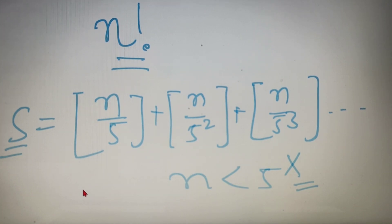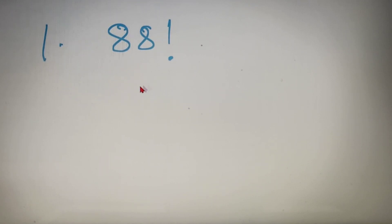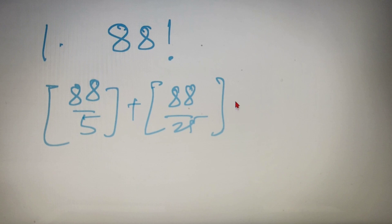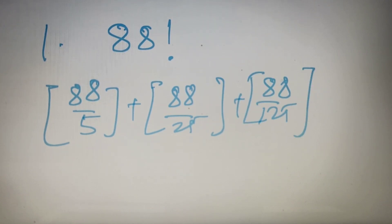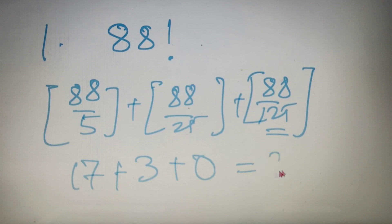If you have trouble understanding this formula, let us solve some examples to make the concept clear. For our first example, we have to find out the number of zeros at the end of 88 factorial. We just put 88 into the formula: floor(88/5) + floor(88/25) + floor(88/125). We go up to 125 because 125 is greater than 88, and all values are under the greatest integer function. So floor(88/5) = 17, floor(88/25) = 3, floor(88/125) = 0, and the sum is 20. Therefore, the number of trailing zeros at the end of 88 factorial is 20.